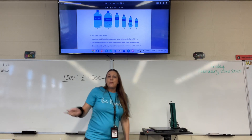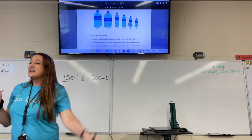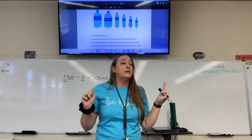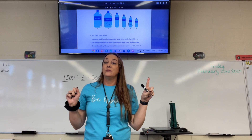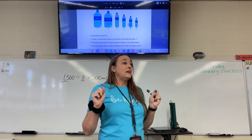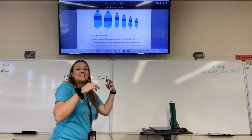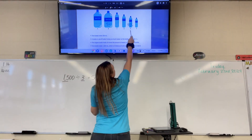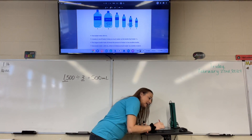Now let's go back to the first clue: one of these bottles has 350 milliliters. Do we know which one that is now? Yes — it's F. Because 350 is the smallest amount and it is smaller than 500. So we know that F is 350 milliliters.